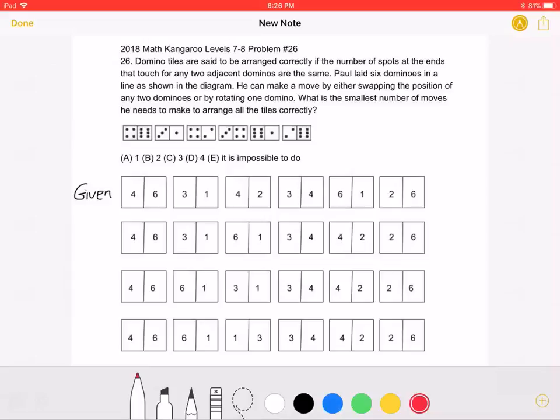This is the 2018 Math Kangaroo Level 7-8 Problem No. 26. Domino tiles are said to be arranged correctly if the number of spots at the ends that touch for any two adjacent dominoes are the same. Paul laid six dominoes in a line as shown in the diagram.